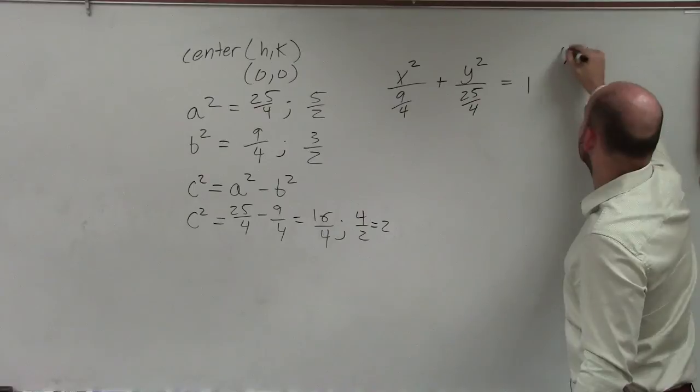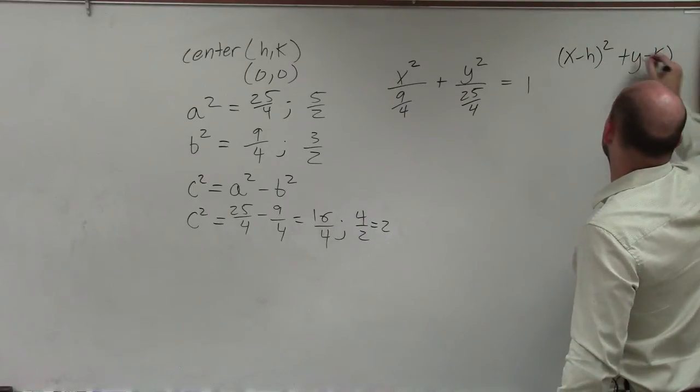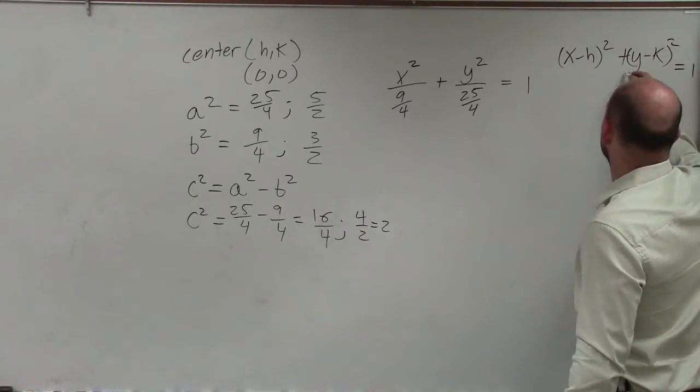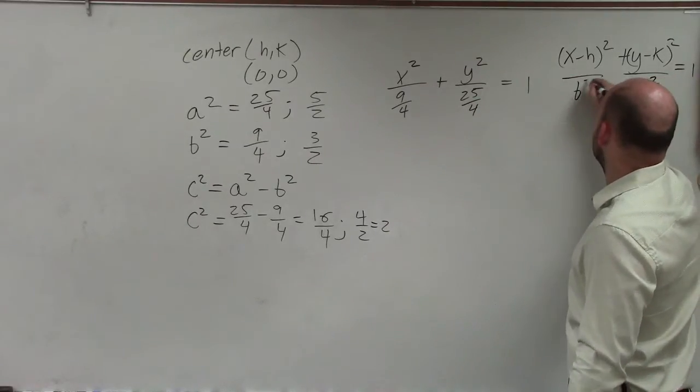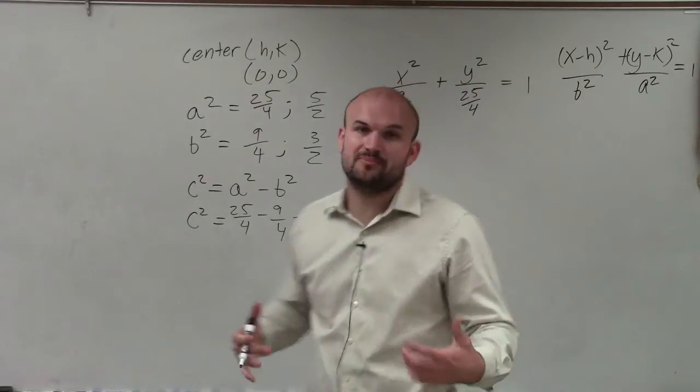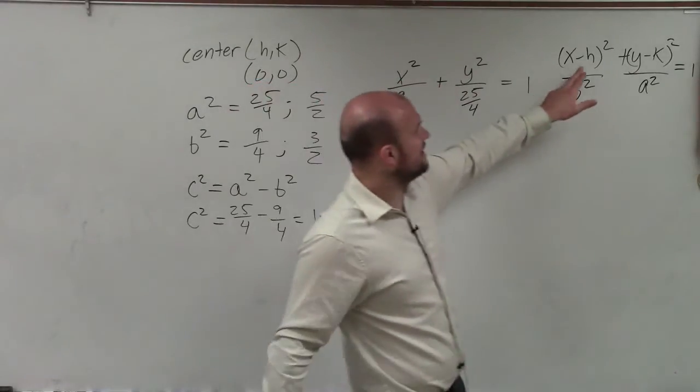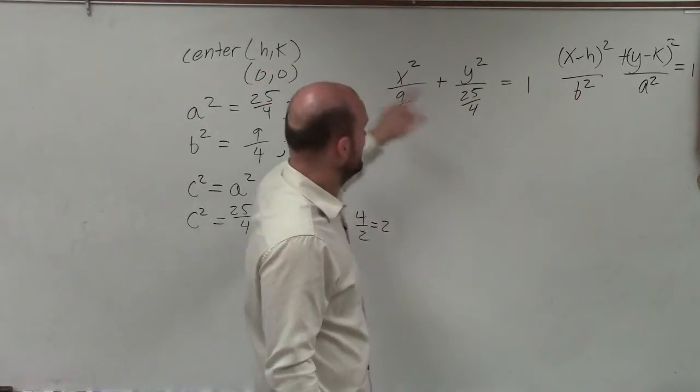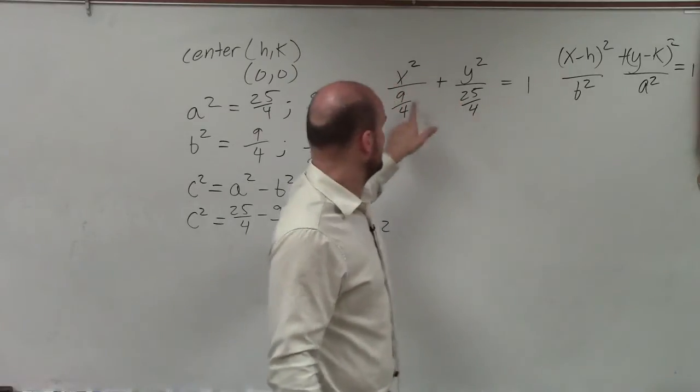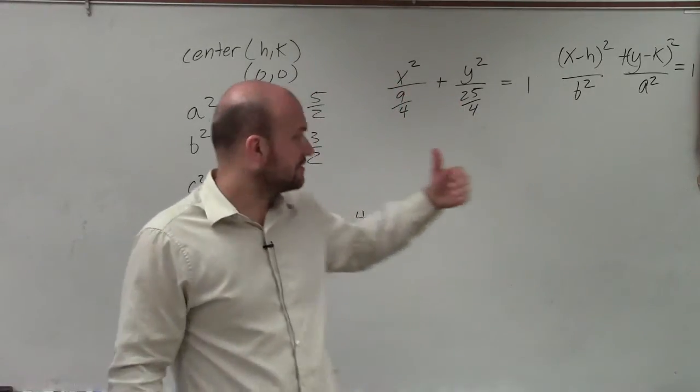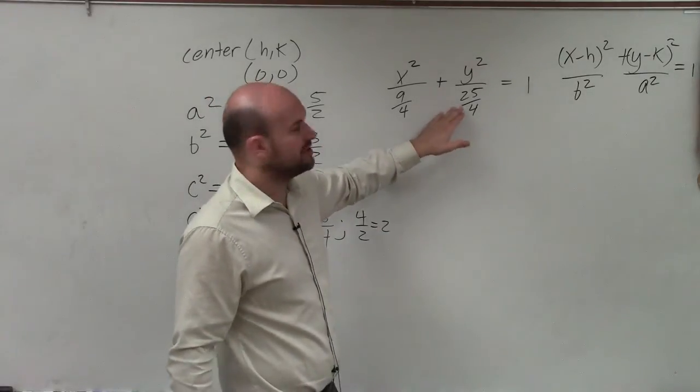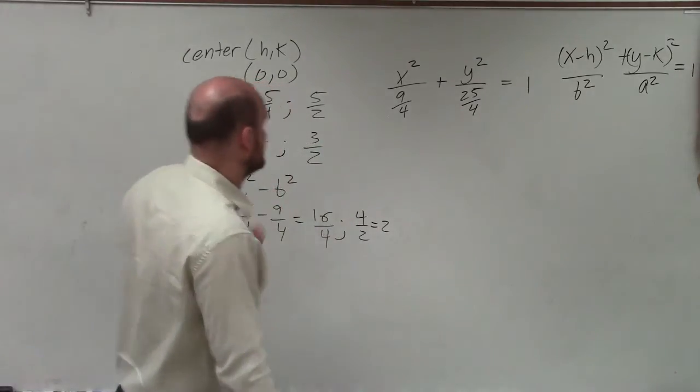So it's x minus h squared plus y minus k squared equals 1. Well, now, remember, since the larger number is under the y, that's going to be my a² and my b². We don't have a c² in there. But so to quickly go through this, that's how I figured out h and k were 0. That's how I said that was a², and that's how I said that was b². Because remember, the a² is always going to be your larger of your two numbers when dealing with an ellipse.